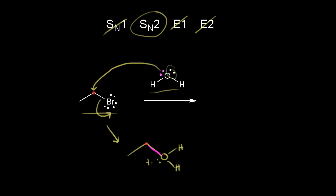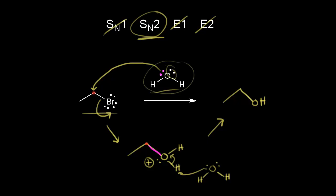To get to a neutral product, we need to deprotonate this. Another molecule of water comes along and acts as a base to take this proton, leaving these electrons behind on the oxygen to give our final product — we'd form ethanol. Now this reaction would need a lot of heat and a lot of time, so it's not exactly the most practical reaction, because an SN2 reaction needs a strong nucleophile and water is not that great of a nucleophile. Because this reaction is so slow, you might see some textbooks say it won't happen.